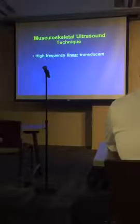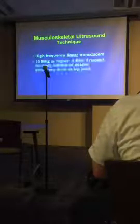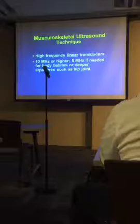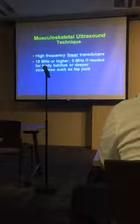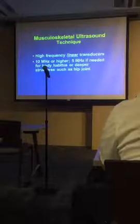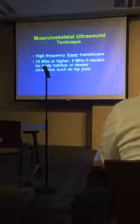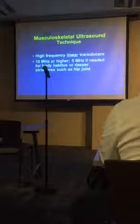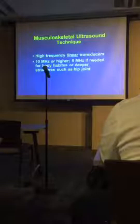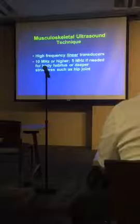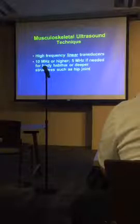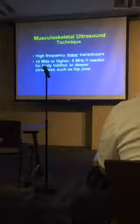High-frequency linear transducers are generally used — 10 MHz or higher, often 12 or 15 MHz. Sometimes we drop down to a 5 MHz probe if needed because of a large body habitus or a deeper structure such as a hip joint. Higher frequencies give better resolution, but you lose penetration; lower frequencies give better penetration. So you'll sometimes need to go to 5 MHz, especially for hip injections.